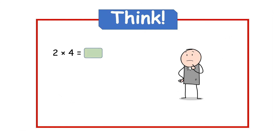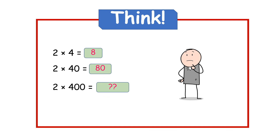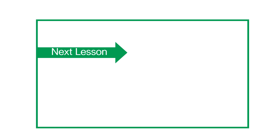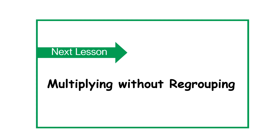Now students, I want you to think about this: if 2 times 4 is 8, then 2 times 40 will be 80. So what about 2 times 400? What about 2 times 4000? From all this, I believe you are now able to multiply a one-digit number by a two-digit number that has a zero, for example 10, 20, 30 up to 90. In the next lesson we will see how to multiply numbers without regrouping. Thank you.